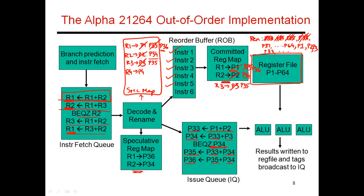A key point here is that instructions get placed in the free pool only when an instruction commits. Because it is only at the time of commit that you realize some old register value will no longer be used, and you will always refer to some new value. Let me explain this a bit more with register R3.